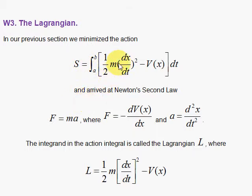So here, the Lagrangian is given by the difference, the kinetic energy minus the potential energy, and by minimizing this integral, we get Newton's second law.